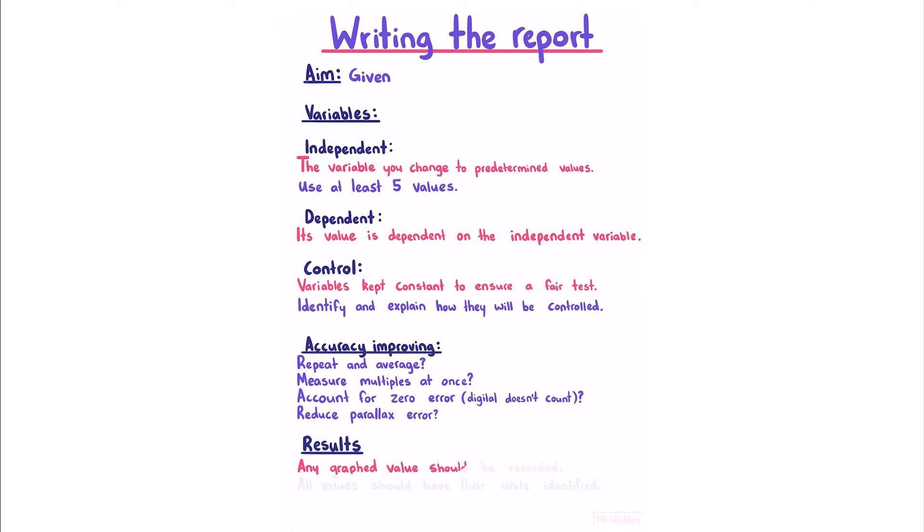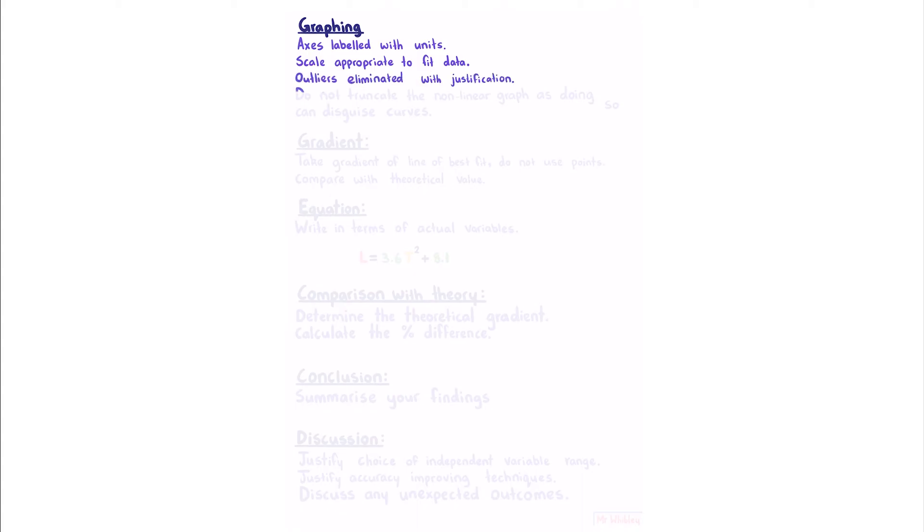For your results, any graphed value should be recorded, and all values should have their units identified. For your graphs, your axes should be labelled with units, the scale should be appropriate to fit the data, meaning that your data fills the majority of the graph and not just the last quarter, any outliers should be eliminated with justification that you've recorded, and do not truncate the non-linear graph, as doing so can disguise curves. What I mean by that, is when you do this squiggly line, so you can start from a value that isn't zero.